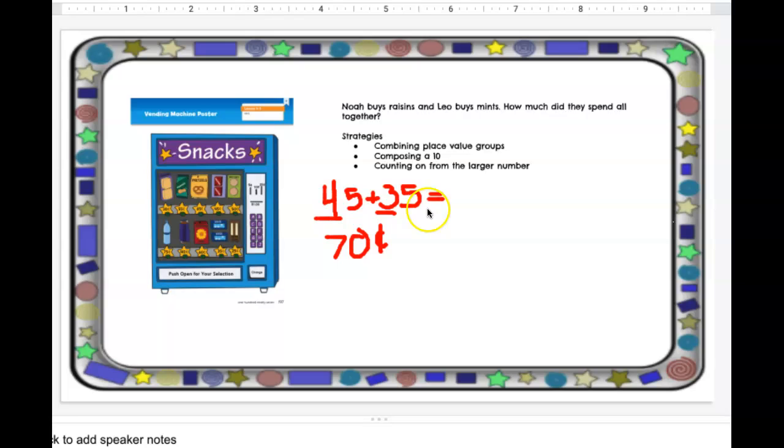Then I'm going to add my ones place, or my pennies. And I'm going to add five plus five. And I know five plus five is 10. So now I have 10 cents.